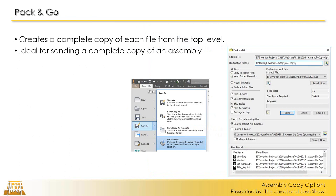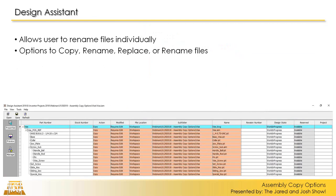So that's Pack and Go — most of you have seen and used it, so we're not going to go too much further because it's the most common. Design Assistant is a pretty nice, useful tool that allows you to take your entire design, starting from a top-level drawing or assembly, and pick and choose or do the entire group of files to copy. You get options for where to put them, what name to give them, and whether to copy, rename, or replace files.